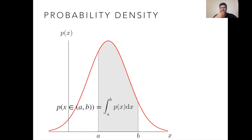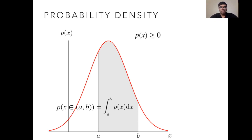Let's discuss the probability density function. For a random real-valued variable x, the probability of that variable taking on values within the interval a and b is given as the integral over that interval — then that particular function is known as the probability density function over the random variable x. This has the normal properties of probability: probabilities should be essentially positive or zero, and the integral over the entire sample space should be equal to 1.